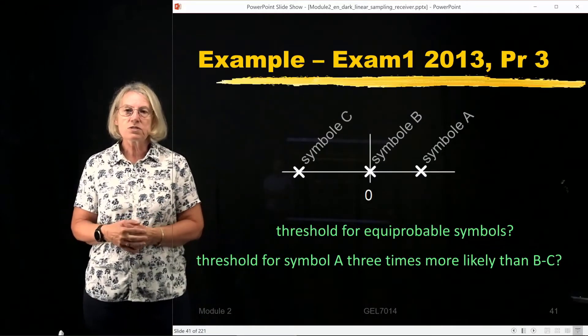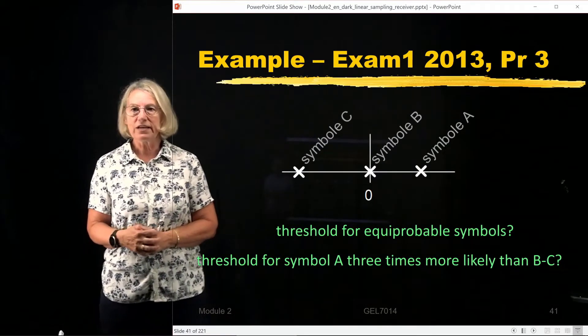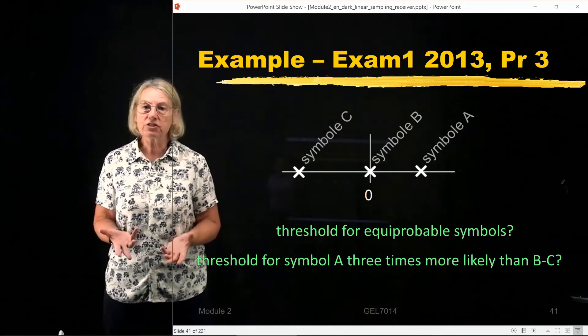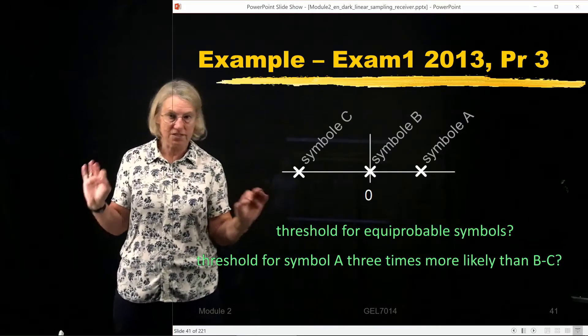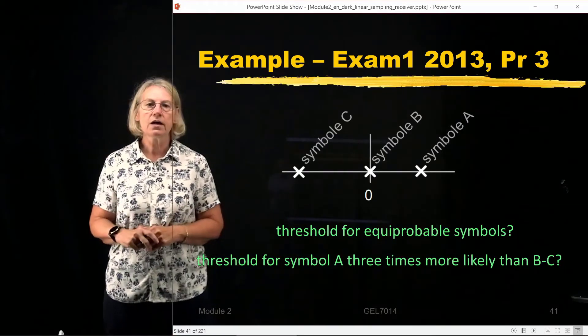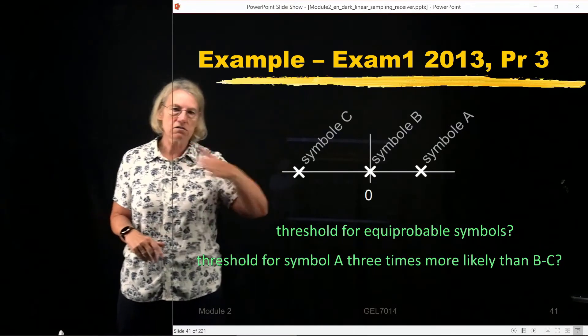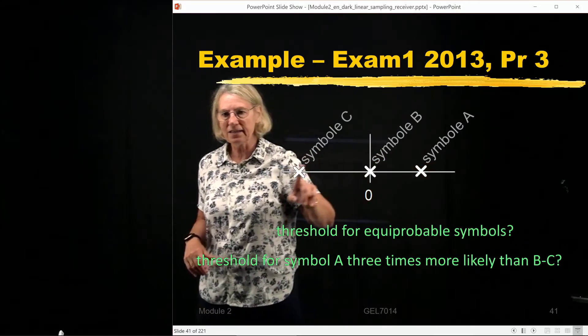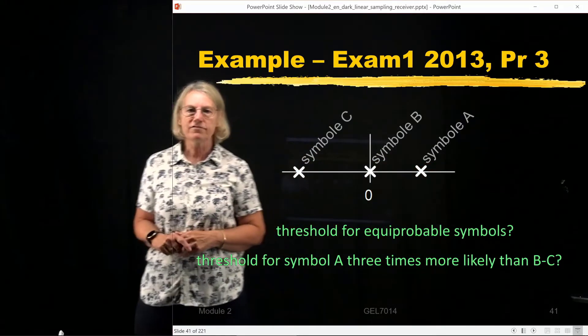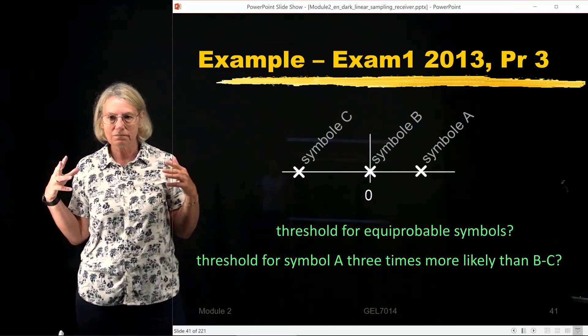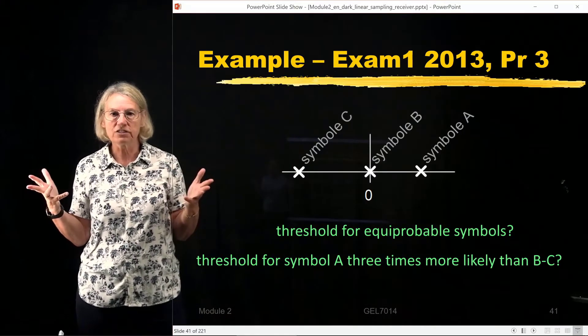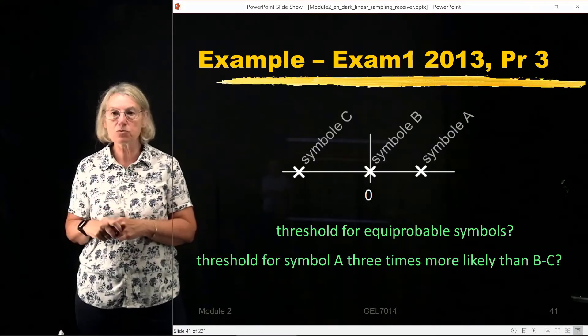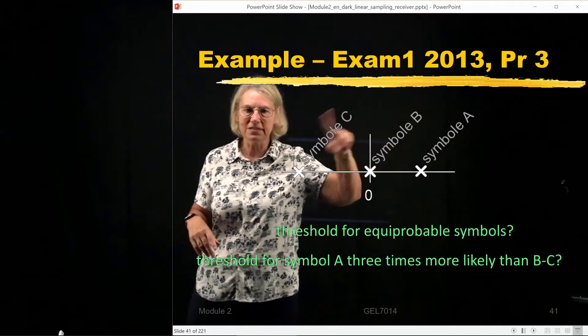So here's an interesting case which was evaluated in an exam in 2013. Suppose that we have a tertiary communication system, that means I have three symbols, and I look here on the axis, I'm indicating the mean values of the likelihood function for these different symbols which could be sent. Symbol A, symbol B, symbol C.